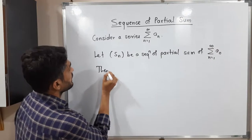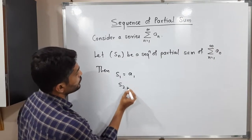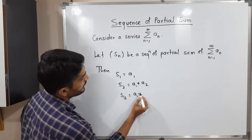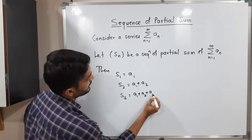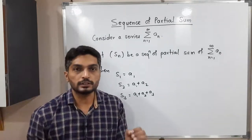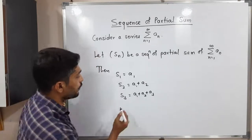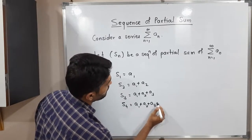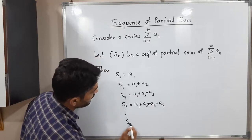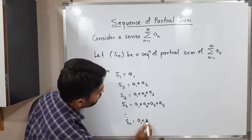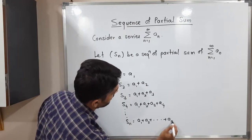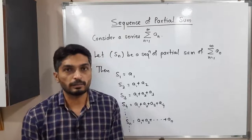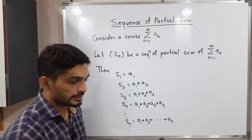Then S1 will be a1. S2 will be a1 plus a2. S3 will be a1 plus a2 plus a3 — that means S3 is the sum of the first 3 terms. S4 will be the sum of the first 4 terms: a1 plus a2 plus a3 plus a4, and so on. In general, Sn is equal to the sum of the first n terms. For each series, we have a sequence of partial sums defined in this way.